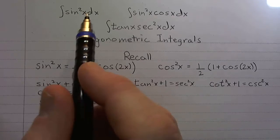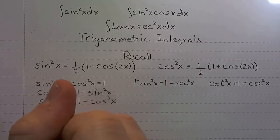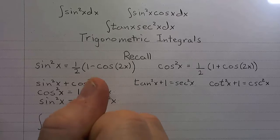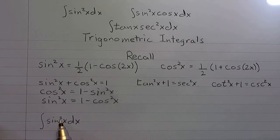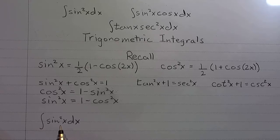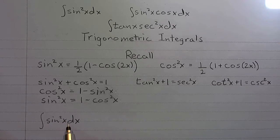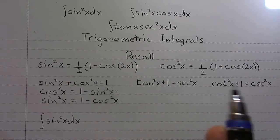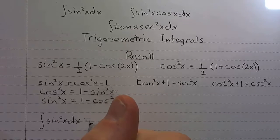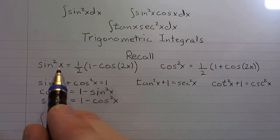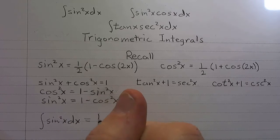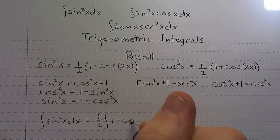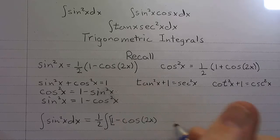Let's look at how we deal with integrals involving even powers of sine or cosine — for example, integral of sine squared x dx. This is an even power. We could use the same approach if this were sine to the fourth or sine to the sixth. The key is it's an even power of sine, and there's nothing else in here with it. We have a power-reducing formula for sine: it's one-half times one minus cosine two x. So we rewrite sine squared x as one-half times one minus cosine two x.